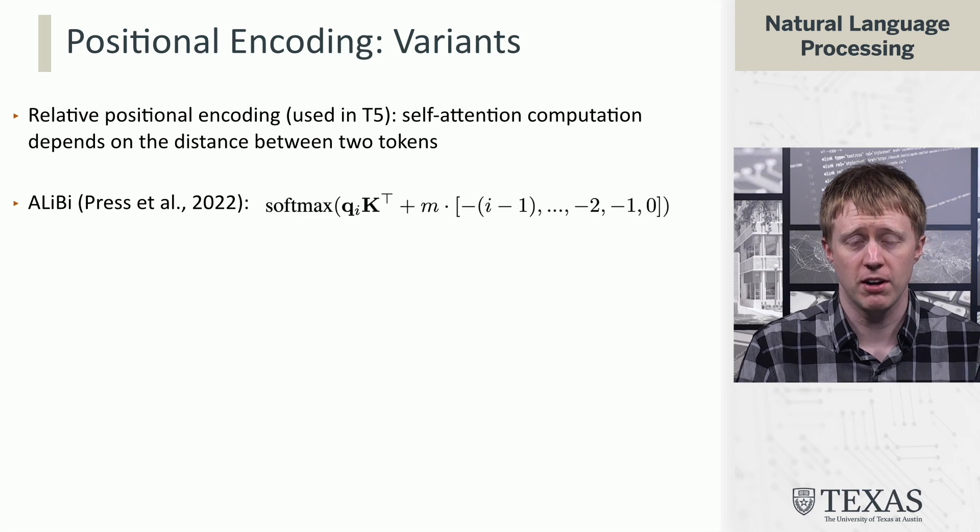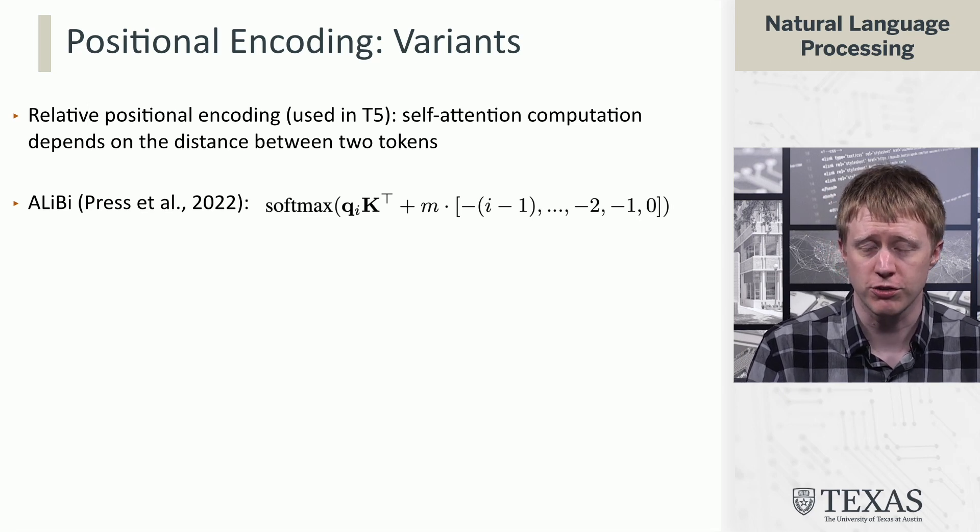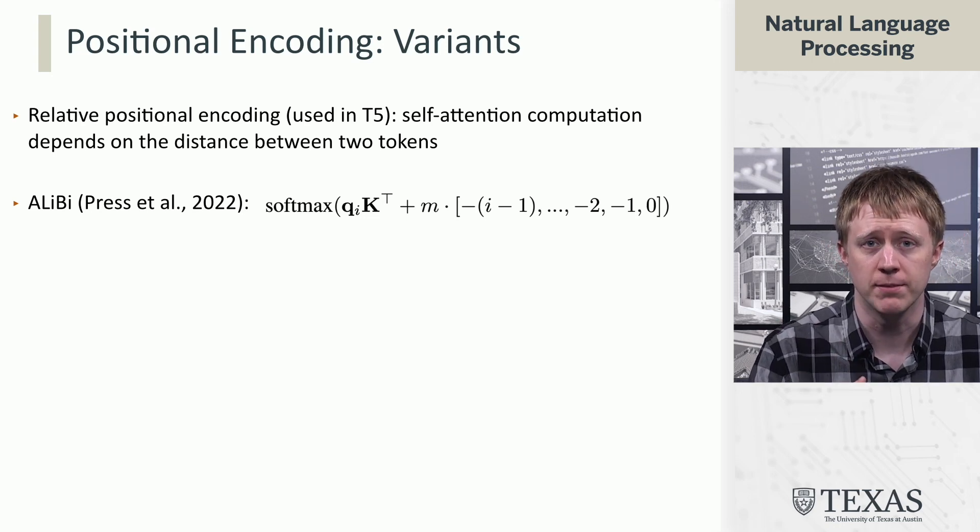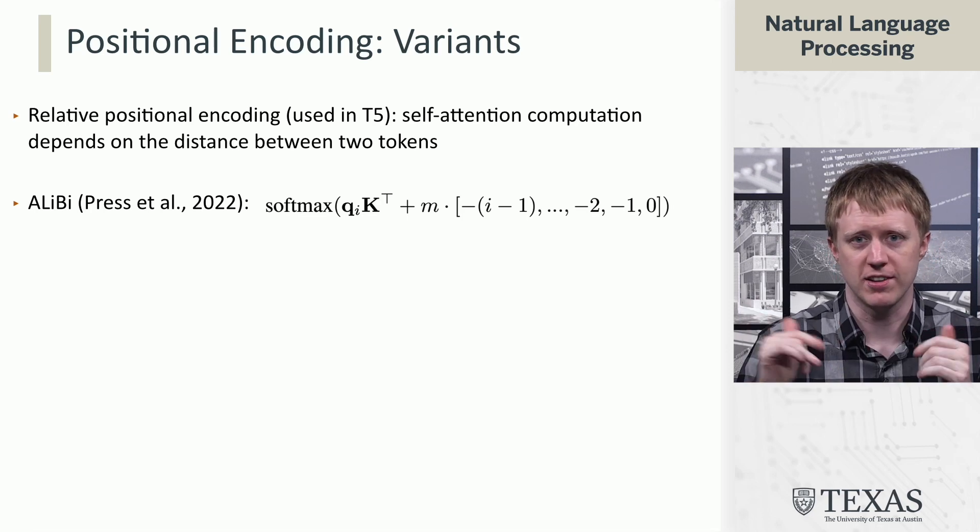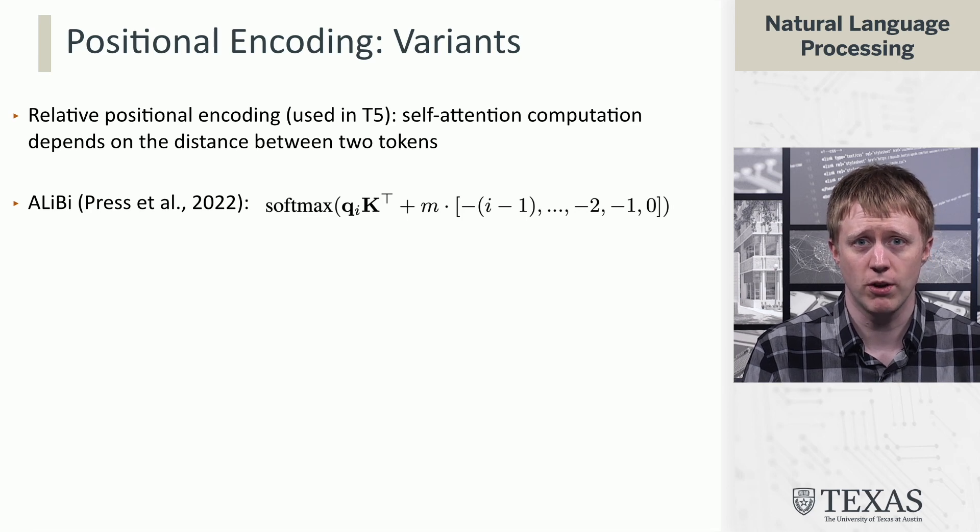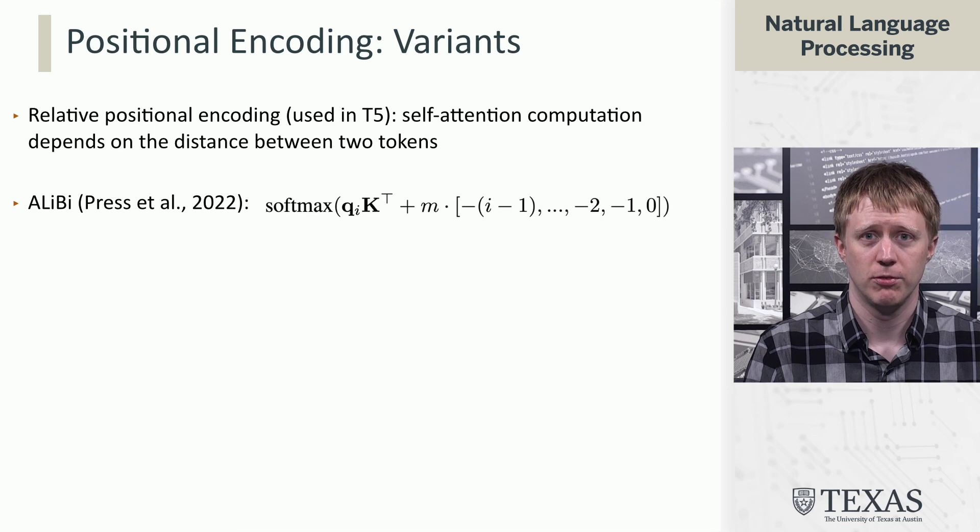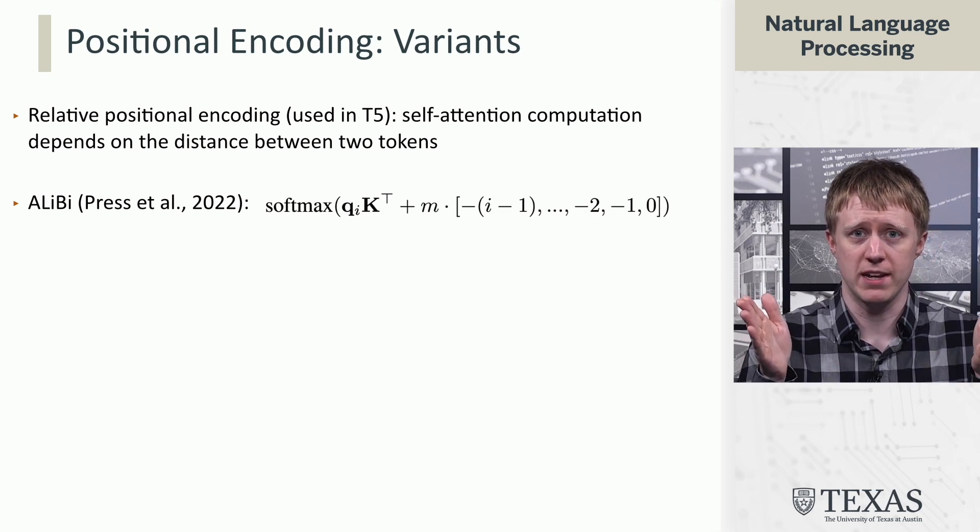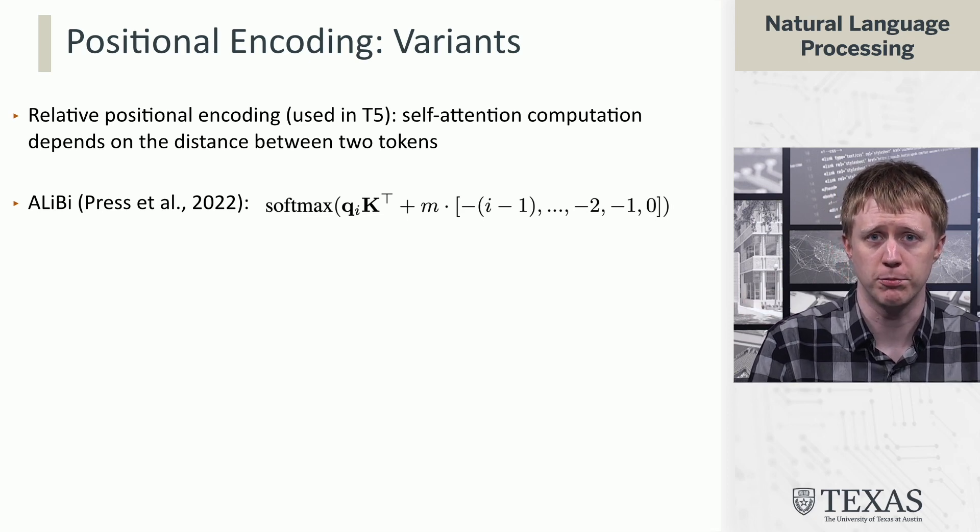There's also a form of this called attention with linear biases, which is also attractive in that it reduces the number of parameters of this kind dramatically. Rather than trying to model each position as a vector of learnable parameters, instead we just say, all right, we're going to add a single constant M times the distance between the tokens that we're looking at. So it's also a kind of relative position scheme.